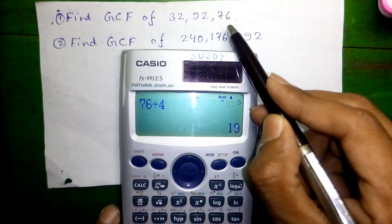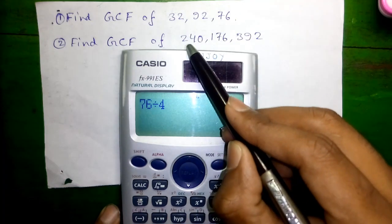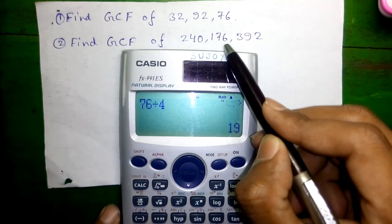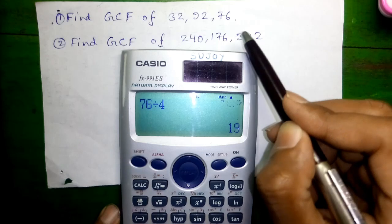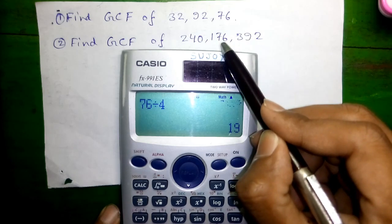Next we'll find GCF of 240, 176, and 392. Again, same process—we'll divide the largest number by the smallest number. So we'll divide 392 by 176.